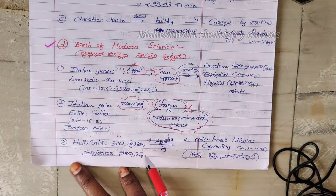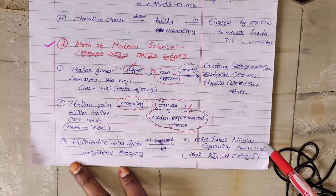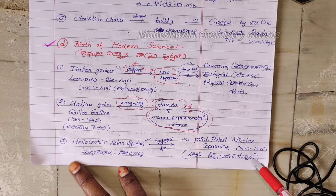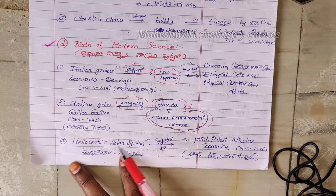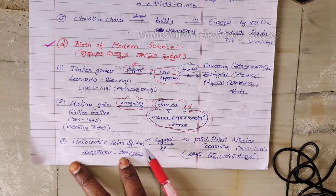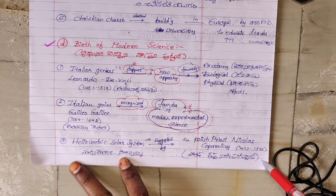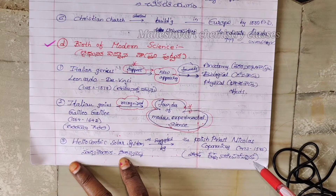The Heliocentric Solar System was suggested by Polish priest Nicholas Copernicus. Copernicus proposed that the Sun, not the Earth, is at the center of the solar system.